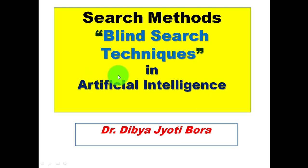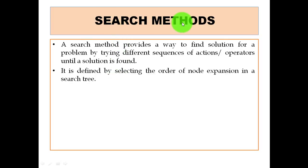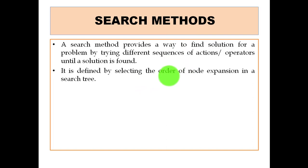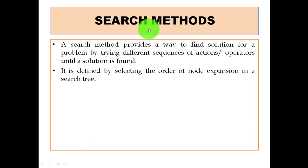So let's start our lecture today. Why do we need a search method? Of course, to search one particular node or object — that may be a place you want to go, or a particular node in a graph. With different conditions or circumstances, that key object may be anything, but for that we need a search method. A search method provides a way to find a solution for a problem.